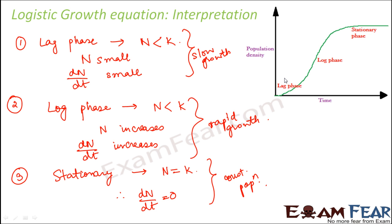Comparing the logistic growth curve with exponential growth, the initial phases appear similar. However, after the log phase, exponential growth keeps increasing indefinitely because there is no concept of carrying capacity — resources are assumed to be unlimited. In logistic growth, the population plateaus at K. That is how logistic and exponential growth differ.